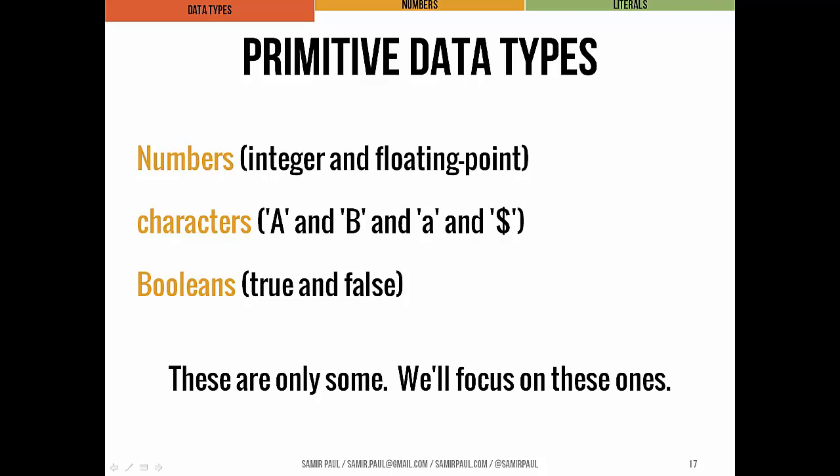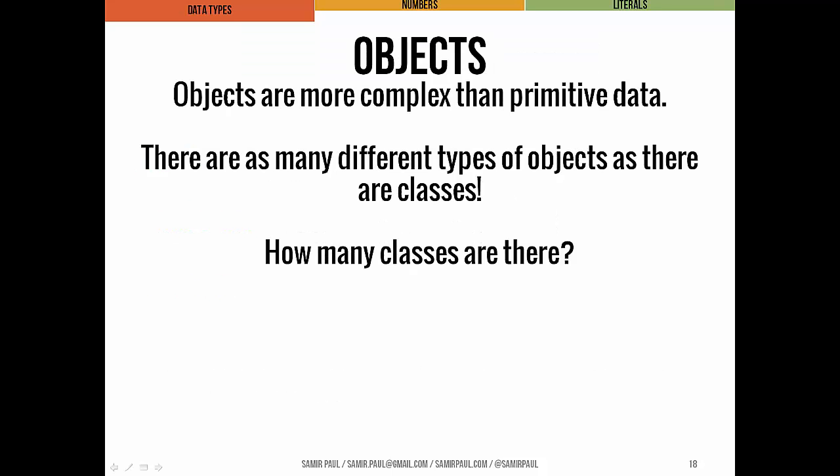Primitive data types — we've seen these all over the place: integers and floating point numbers, that means int and double, those are the two data types we've seen so far. Characters like uppercase A, uppercase B, lowercase A, the dollar sign. Boolean values — true and false. These are all the most basic kinds of data. There's a ton more, but these are the ones we're going to focus on as primitive data types.